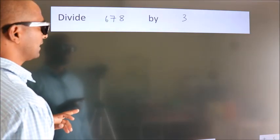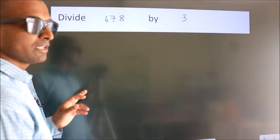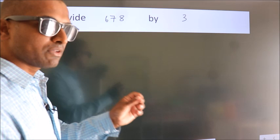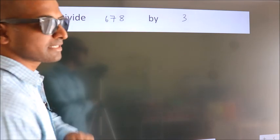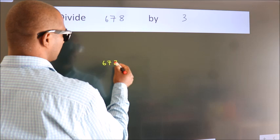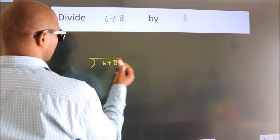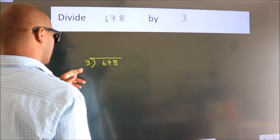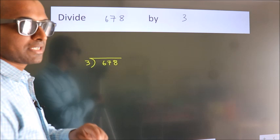Divide 678 by 3. To do this division, we should frame it in this way. 678 here, 3 here. This is your step 1.